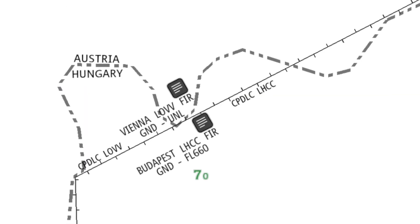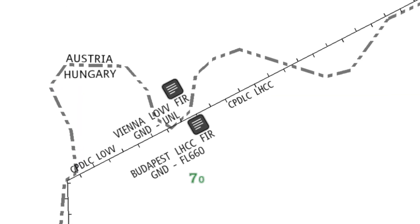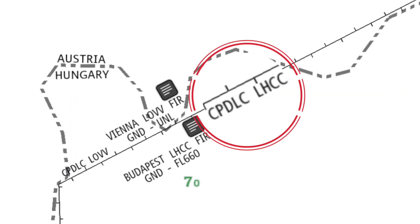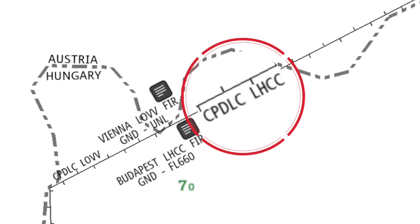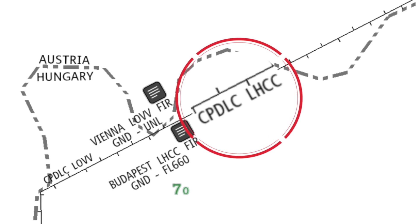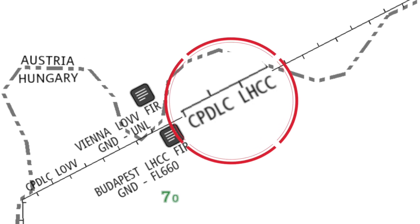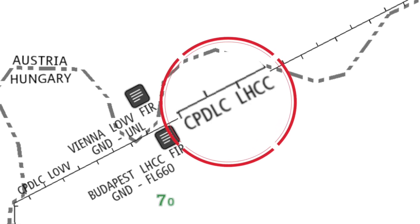The logon ID can be found on an en route chart, which also tells pilots what Datalink services are offered by the ATSC.